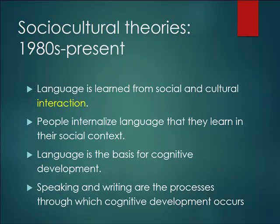There's one more set of theories about language acquisition that we should look at, and these are sociocultural theories. These have really been developed in the last 40 years or so since the 1980s. A couple of things are immediately obvious about language use: it doesn't just occur in the brain of one child. It occurs in speech communities, and as far as acquisition goes, a sociocultural theory is that languages are learned from cultural and social interaction.